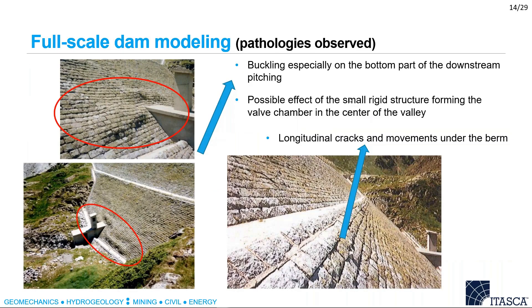What we observe on site are several pathologies studied in this project. The first, visible in the left figures, is the buckling of some blocks in the downstream pitching, especially at the bottom part — mainly around a rigid chamber structure in the center of the downstream pitching, suggesting a possible effect of this rigid structure. In addition, there are longitudinal cracks and movements under the berm at the mid-height of the downstream pitching.